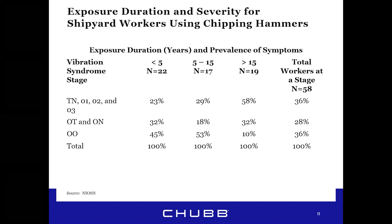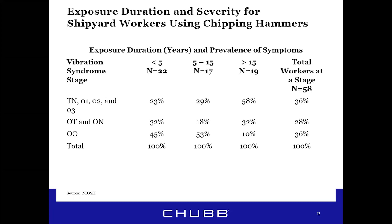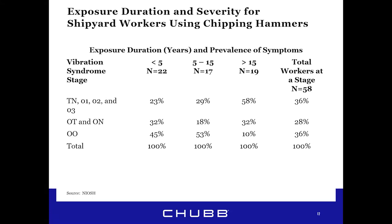There's a direct relationship between years of exposure and severity of vibration syndrome. This table shows the relationship in foundry workers using chipping hammers. The milder symptoms remain at 48% from less than 18 months up to three years; after three years, the more severe syndromes O2 and O3 jump to 50%. The shipyard workers' table tracks exposure duration and severity over a 15-year period and follows a similar pattern, culminating in more severe symptoms after 15 years of exposure — consistent with the principle that the length of time exposed to a physical hazard only increases the likelihood and severity of occupational disease.